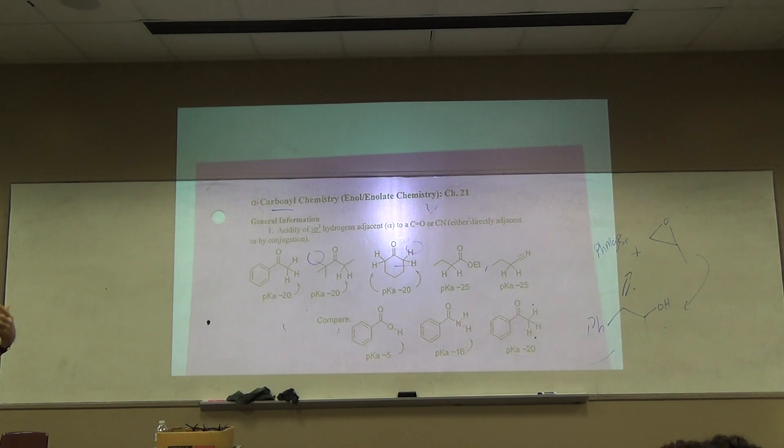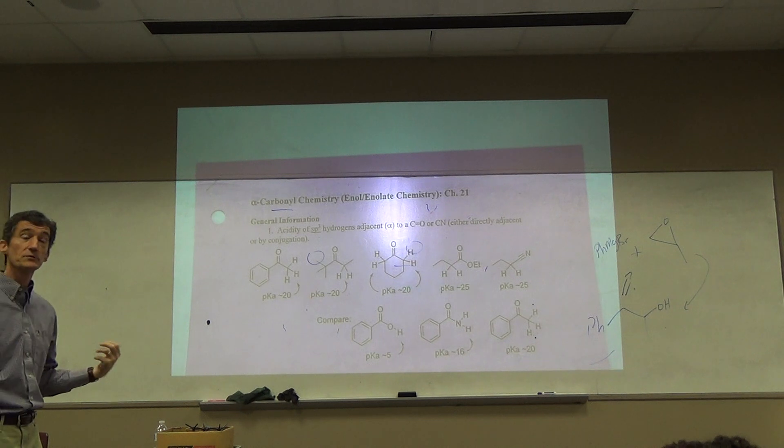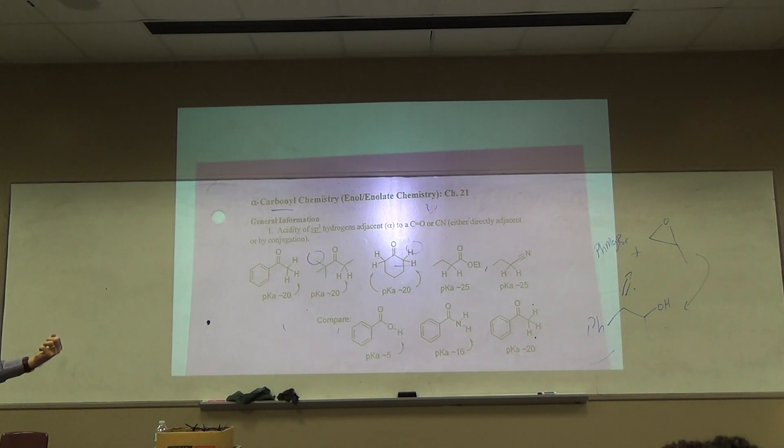Enols are typically not stable. They undergo a process called tautomerization. You know the mechanism for tautomerization? OREO. Some of you did not have me, but OREO is a mnemonic that I don't know who created, to remember the tautomerization mechanism. We may mention that later. But that's the type of chemistry we're going to get into.